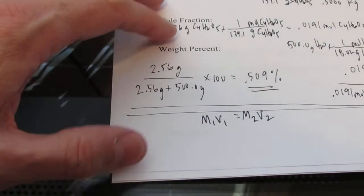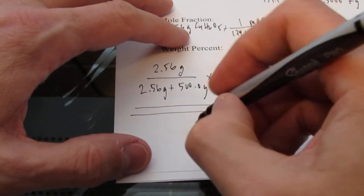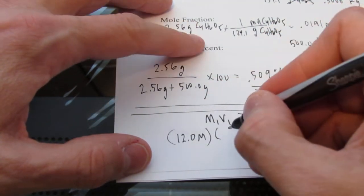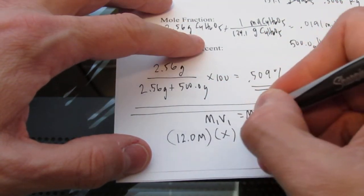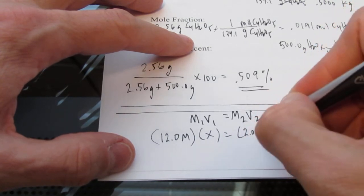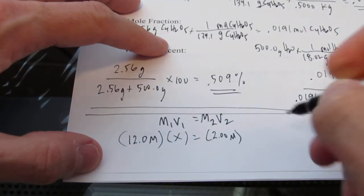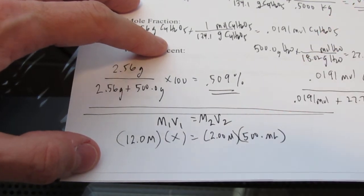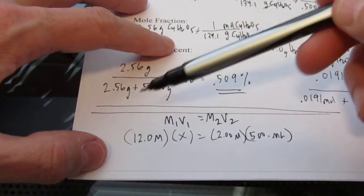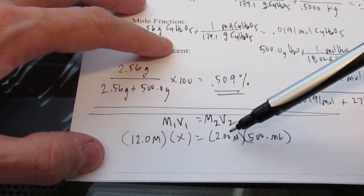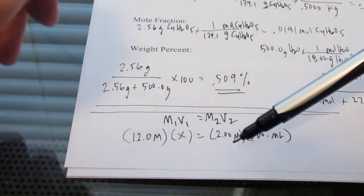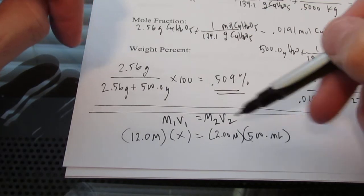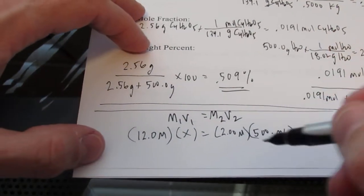So I could ask you something like this. Suppose we had 12.0 molar hydrochloric acid. And I wanted to know how much of it I needed to make 2.00 molar hydrochloric acid. And let's say I want to make 500 milliliters of that solution. Okay? So this is a dilution. I'm going from 12 molar to 2 molar. And of course, when you do a dilution, you're adding water. And of course, that will dilute it to my final volume. And my molarity will be 2 molar.